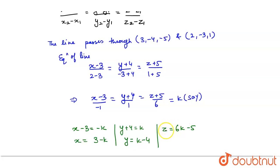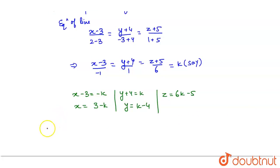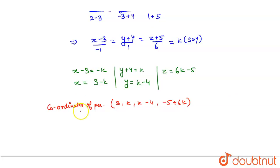Now, I have found this. The coordinates of the points would be (3 - k, k - 4, -5 + 6k), or we can write it either way.